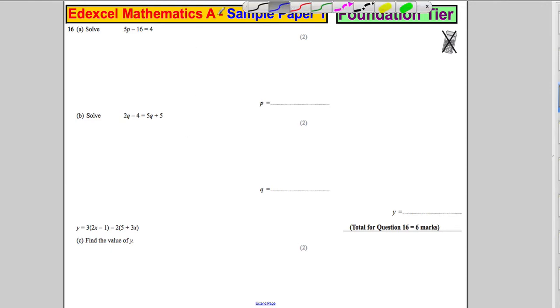Okay, for part A we're asked to solve this equation. Solve 5P subtract 16 is 4.